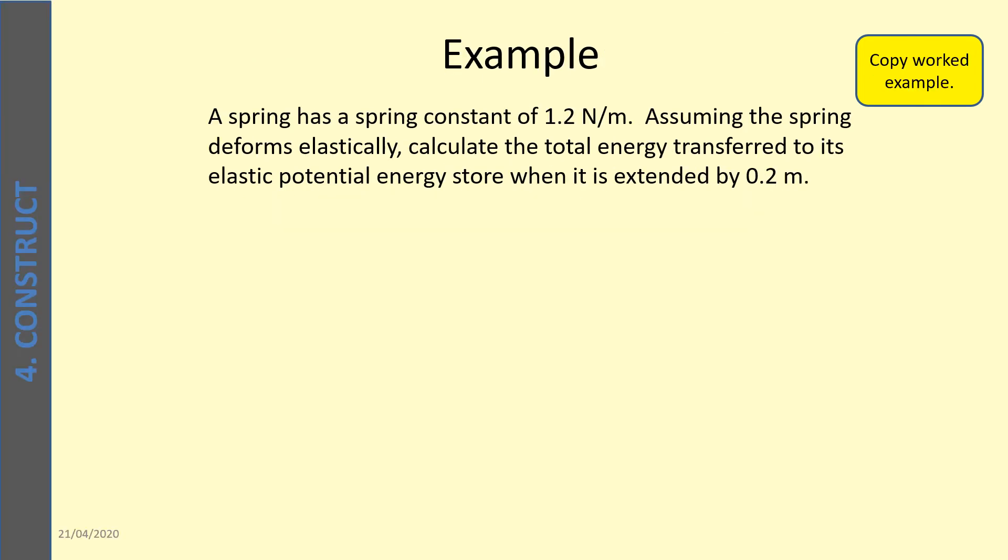So this is a worked example for you. A spring has a spring constant of 1.2 newtons per meter. Assuming the spring deforms elastically, so that is before the limit of proportionality is reached, calculate the total energy transferred to its elastic potential energy store when it's extended by 0.2 meters.